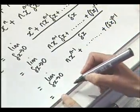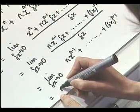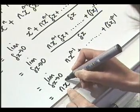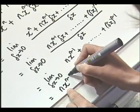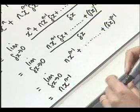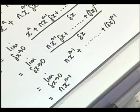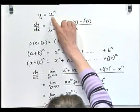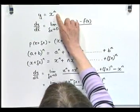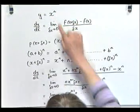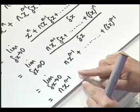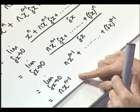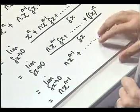So our derivative is just n times x to the power of n minus 1. So our derivative of x to the power of n is n times x to the power of n minus 1.